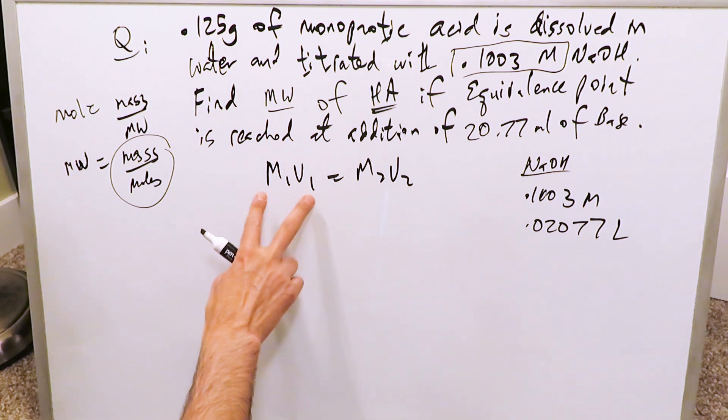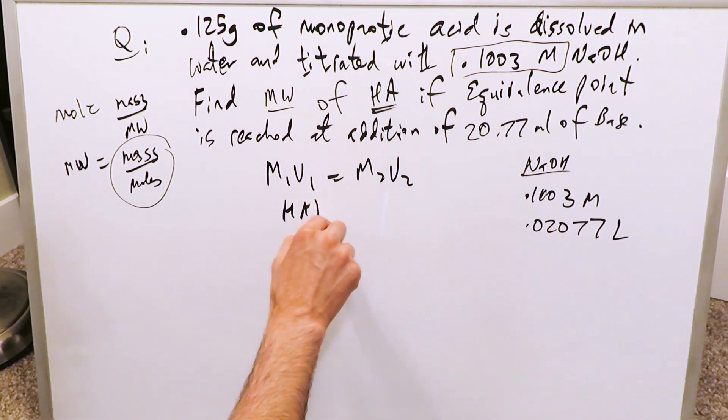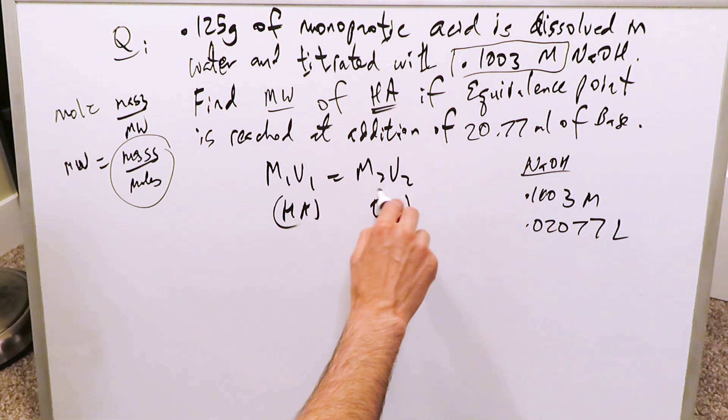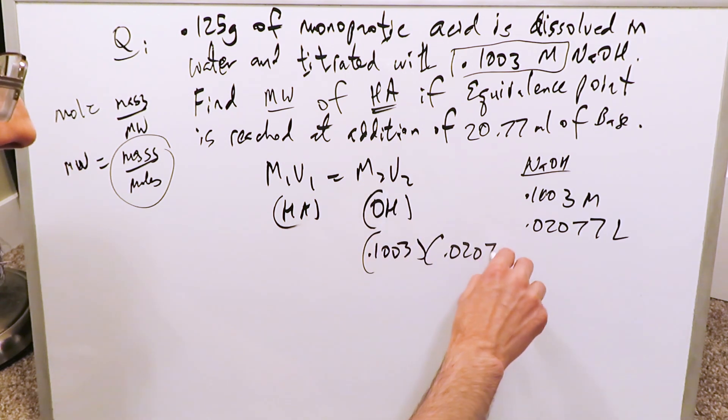At the equivalence point, M1V1 is equal to M2V2. This is here for your acid. This here is your base. I'm just writing that as OH. I know my items here for the base. It's 0.1003, your molarity times your volume, 0.02077, is equal to...